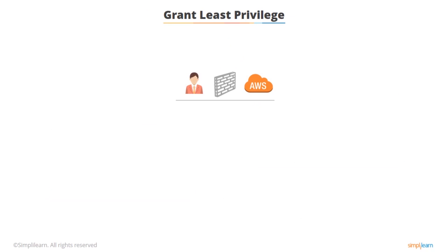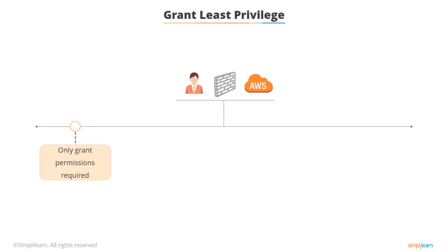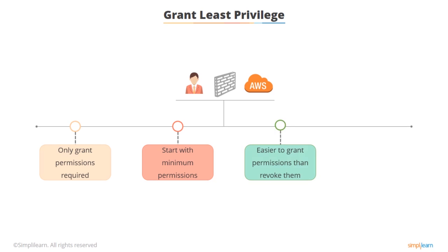When you create IAM policies, make sure that you grant least privilege – only grant the permissions that users require to perform only the tasks they have to do. Although it's easier to grant elevated credentials from the start, it's not good practice. It's more secure to start with minimum permissions required and grant additional access as needed. Trust me when I say it's easier to grant permissions to a user than trying to revoke them. The goal of IAM is really to protect your assets first, rather than to make your life easier.